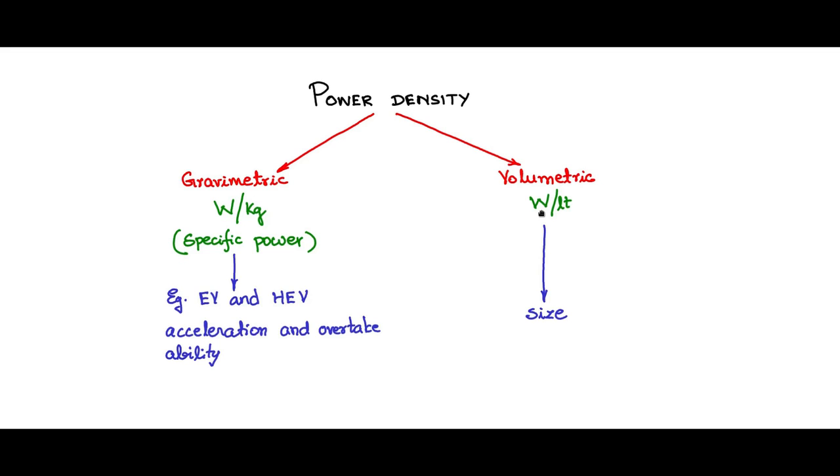One must note, however, that energy density and power density both cannot be high in a given battery. It so happens that the battery chemistry is such that if the energy density is high, the power density is low. Or if the power density is high, the energy density is low. So these two seem to offset each other.